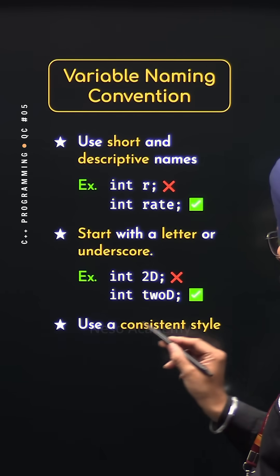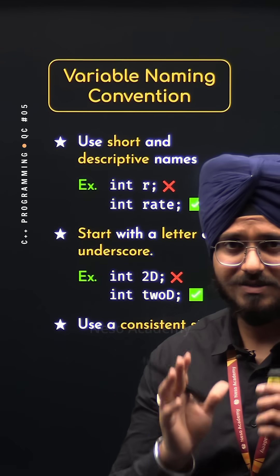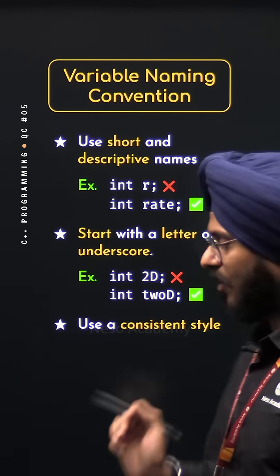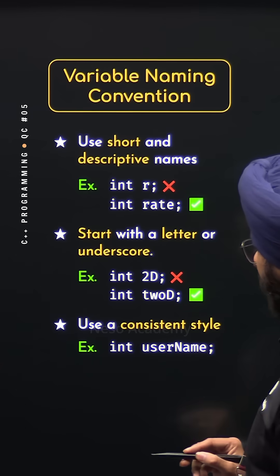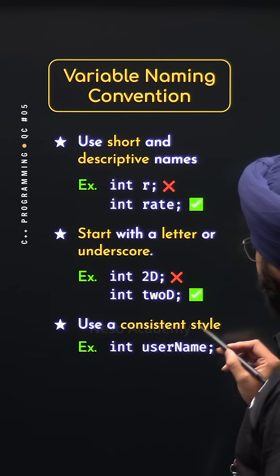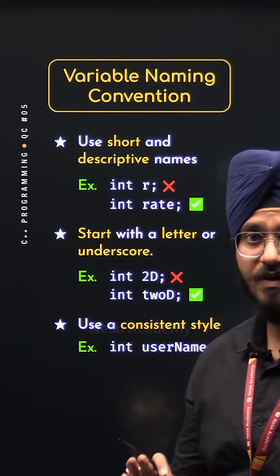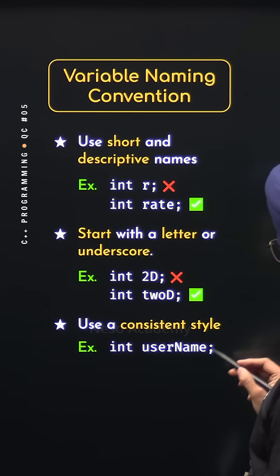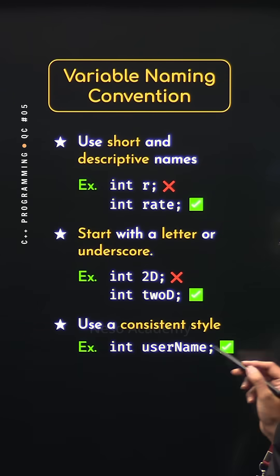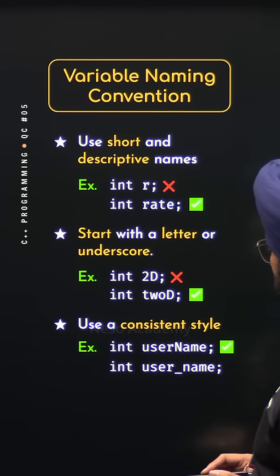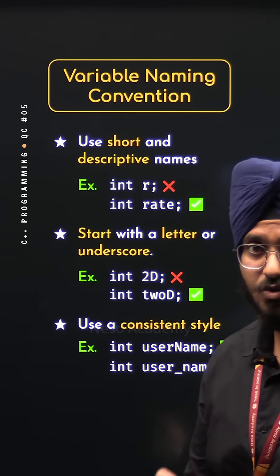Point number 3: use a consistent style. Always follow a consistent style for your variable names. For example, this variable is following the camel case convention, where the first letter of the second word and subsequent words are always capitalized. This one is perfectly valid, and you can follow this.